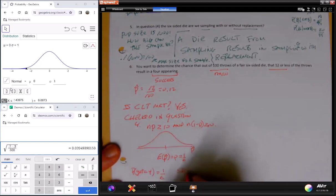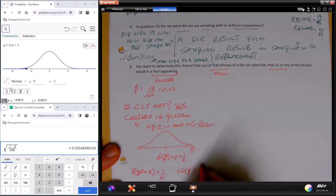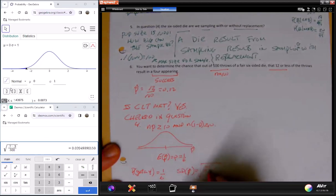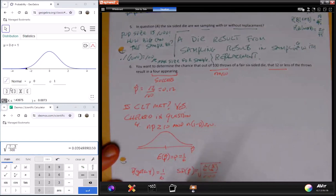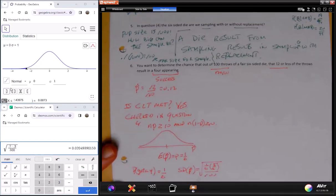The standard deviation of this is going to be one-sixth times the failure, five-sixths. Notice they have to add up to one, over 100. Yes, n is 100. Okay, so now that's set, and after that it looks exactly like we did before.